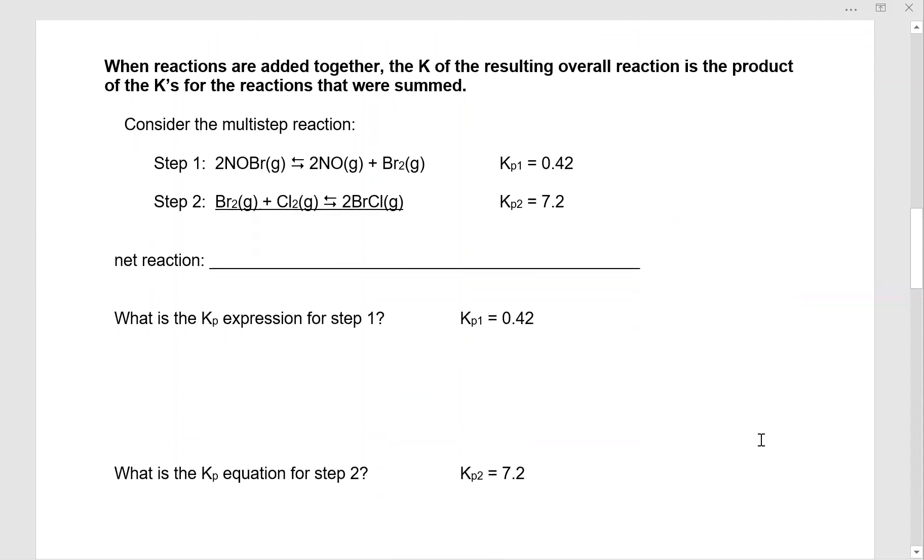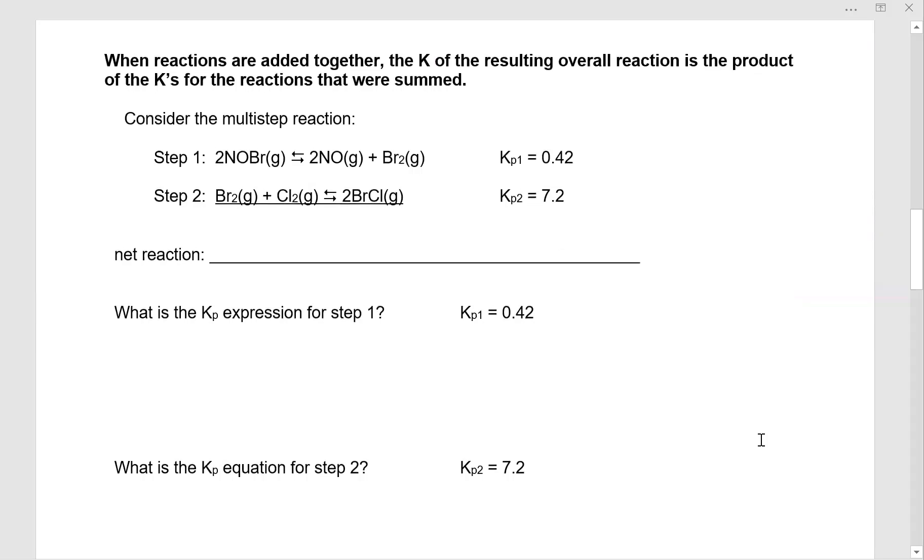Last rule. When reactions are added together, the K of the resulting overall reaction is the product of the K's for the reactions that were summed. Again, this sounds like a mouthful. What it really means is that K net is going to be equal to K1 times K2 times K3, with the K's being the equilibriums for the individual steps. So let's take a look at this multi-step reaction here.